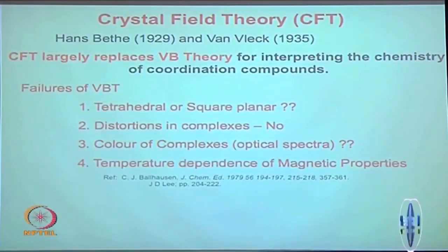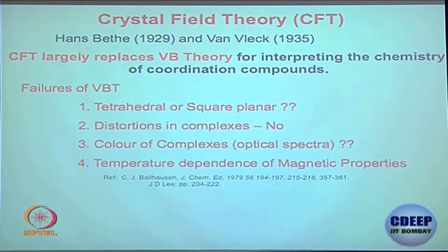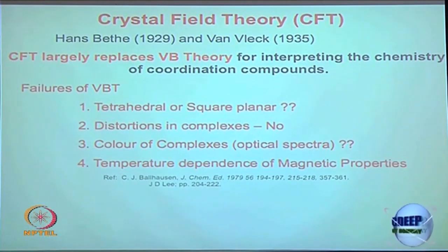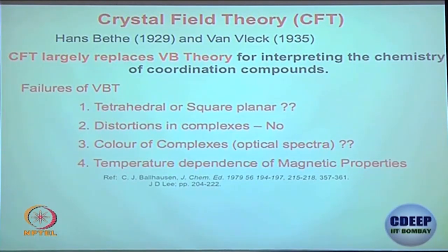A lot of information you cannot get from valence bond theory, like why a specific compound is colored, and what happens to their magnetic properties. These are the things we are really interested in. So this is where crystal field theory comes in. It is based on the failure of valence bond theory — where valence bond theory fails to explain further, crystal field theory picks up.